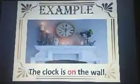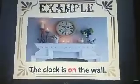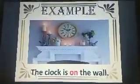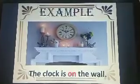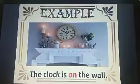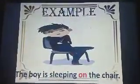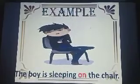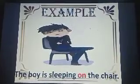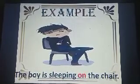Now, move on to 'on.' The clock is on the wall. Where is the clock? Yes, it is on the wall. The boy is sleeping on the chair. Here, 'on' is a preposition used to identify the position of a person — that is, the boy.